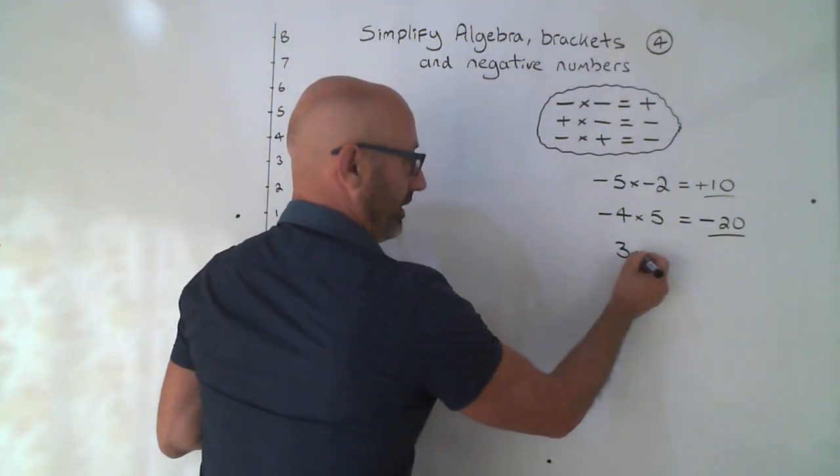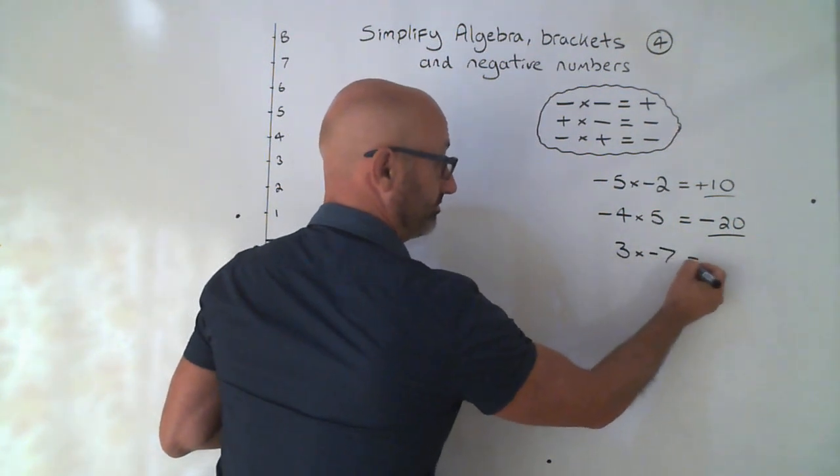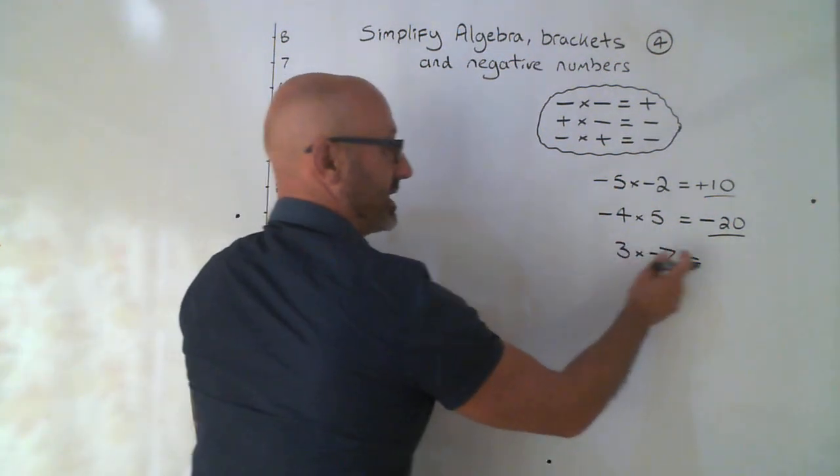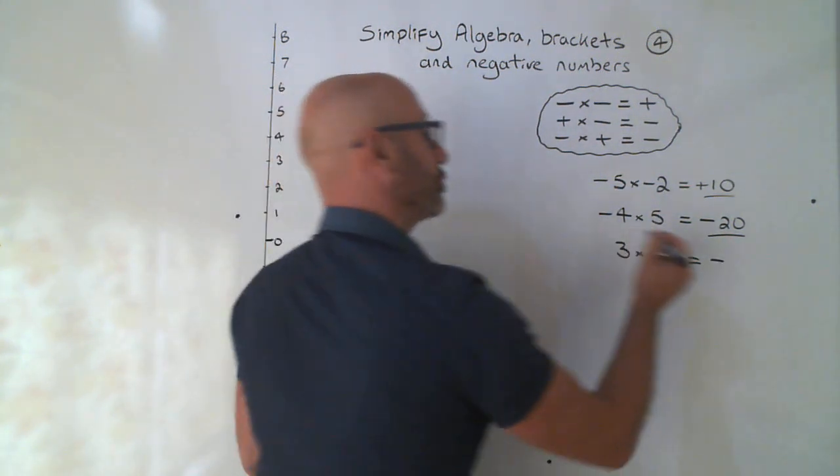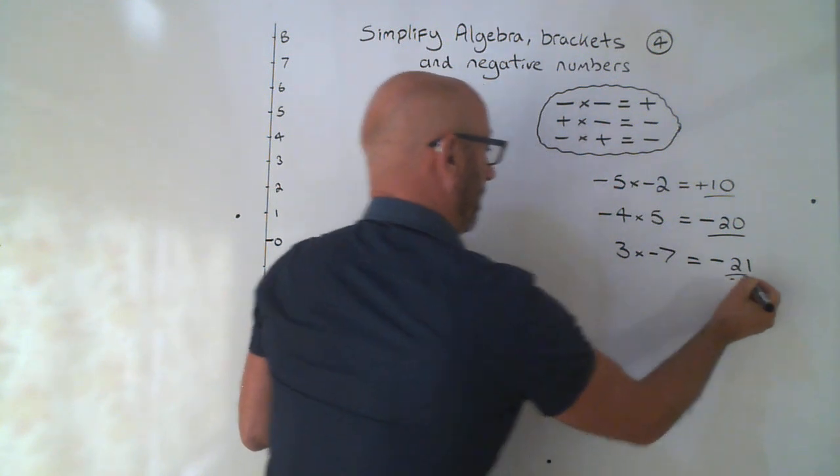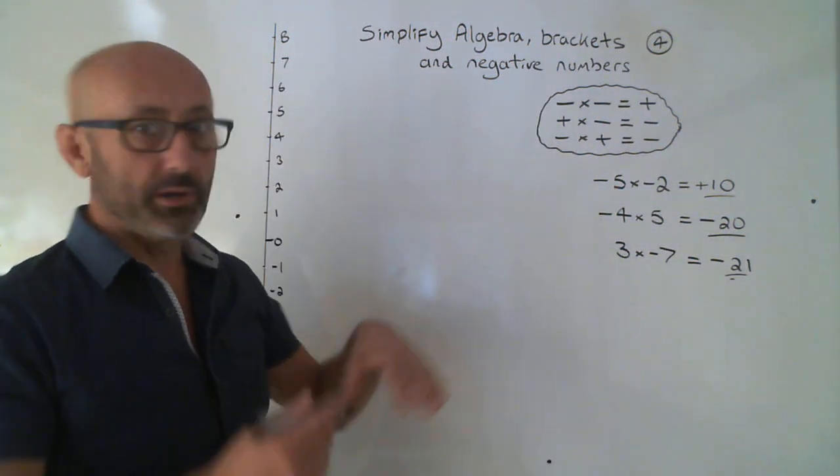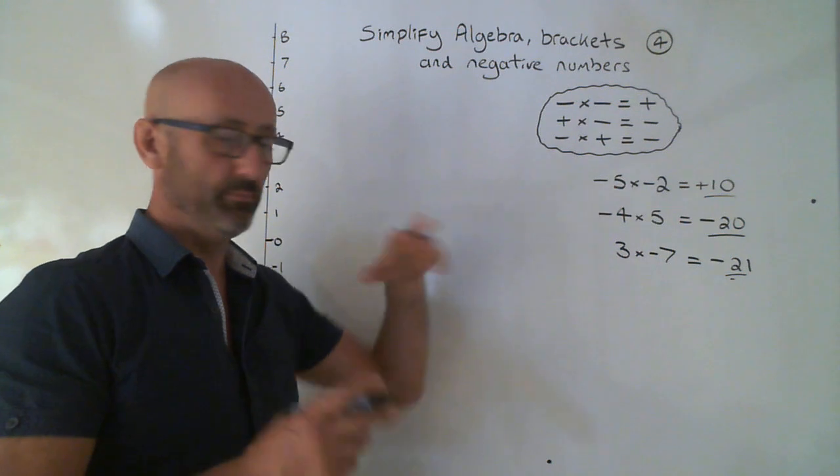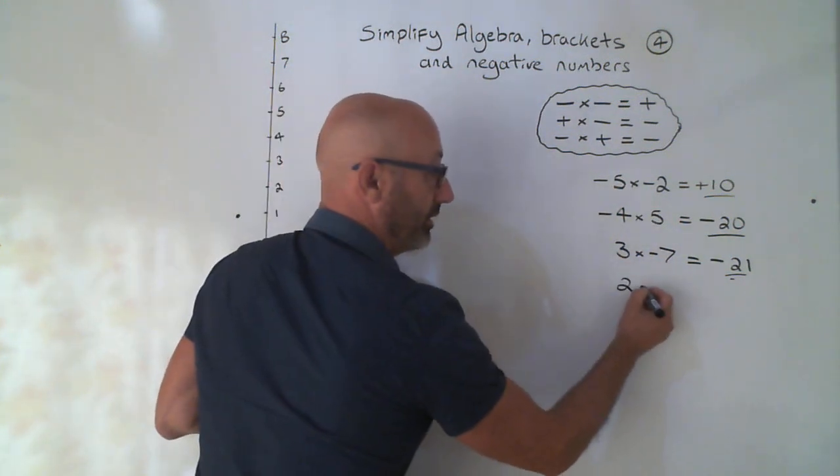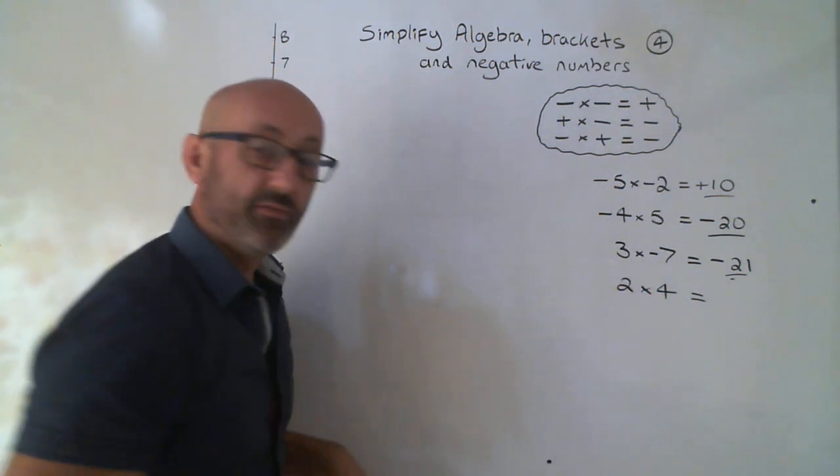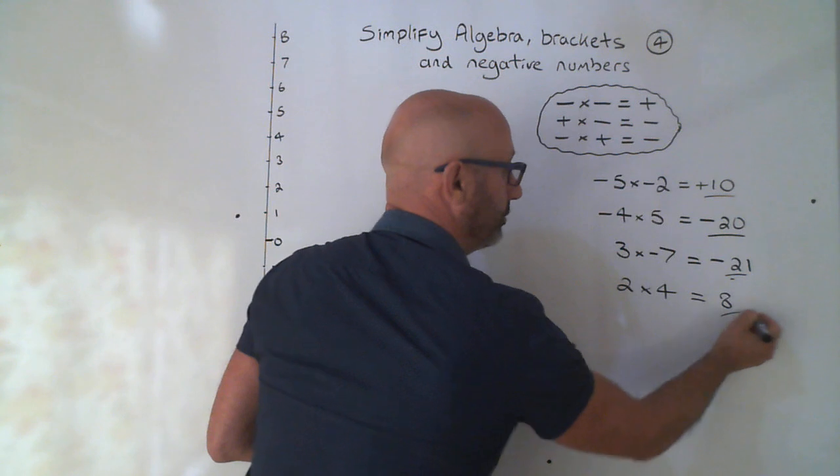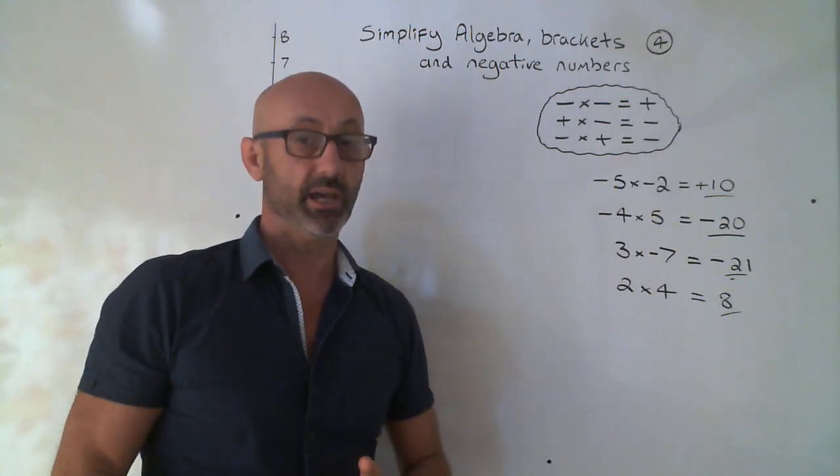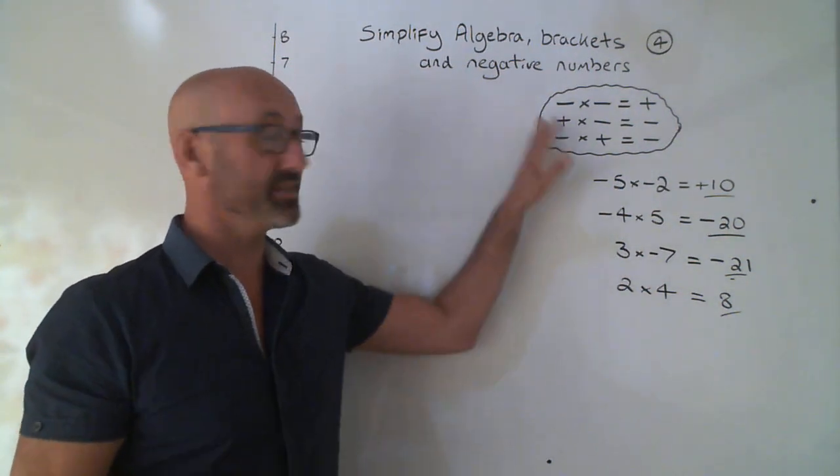Look at this one. 3 times minus 7. Can you think what the answer to that one is? Well, plus times minus minus, 3 times 7, 21. You may well say, oh hang on Johnny Mathematics, you've not told us what plus times plus is. Well, you already know that one. If I said to you, what's 2 times 4, you would all say 8 wouldn't you? And really that is plus times plus is plus. So you already know this rule. We don't need to write it down.